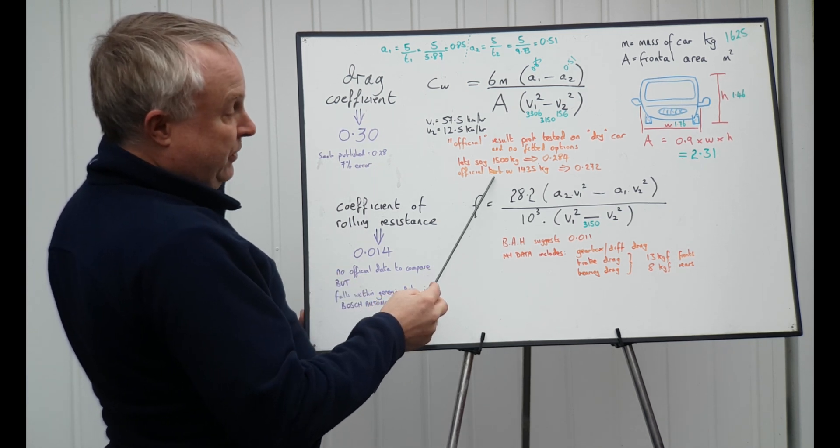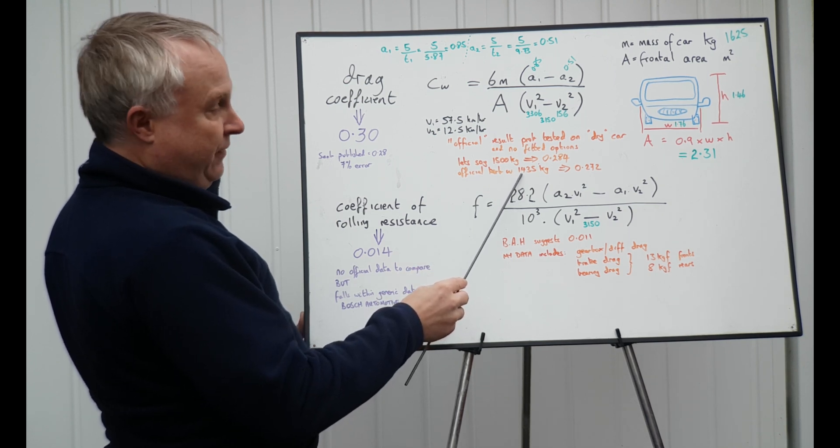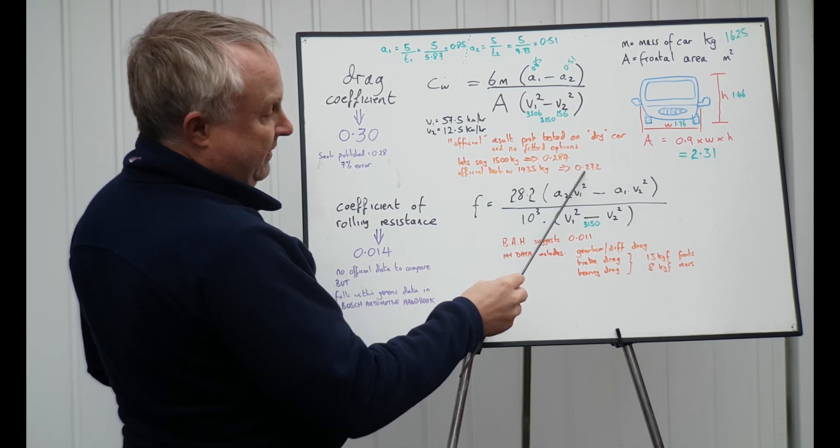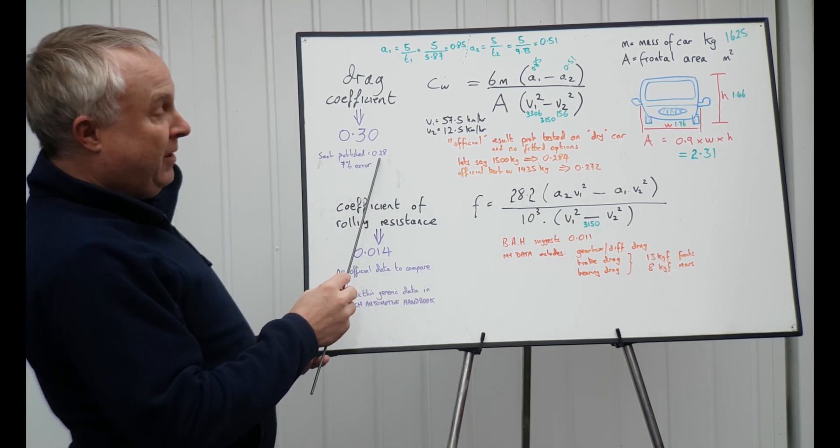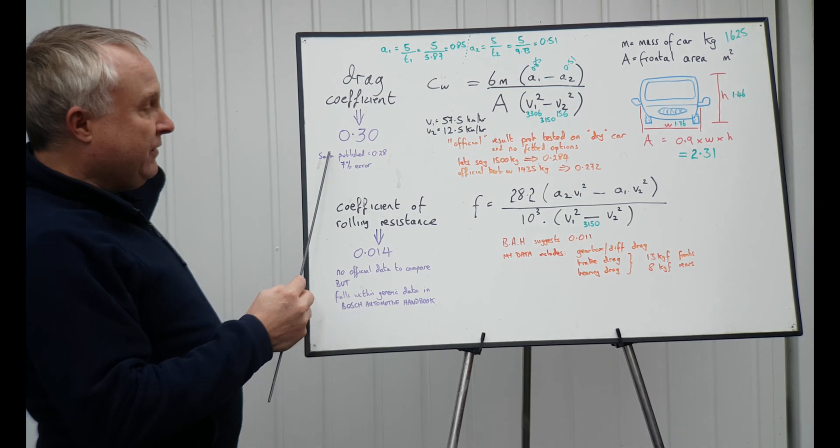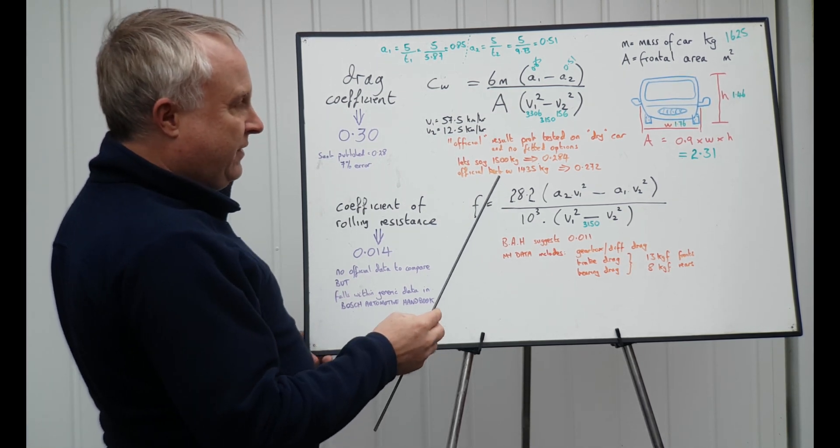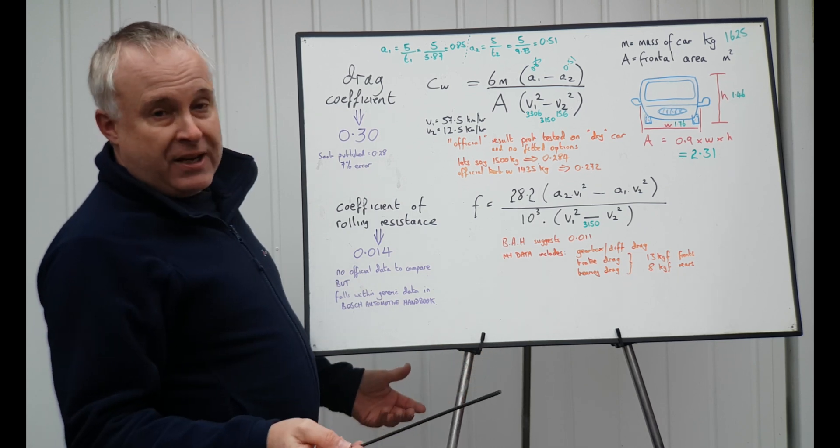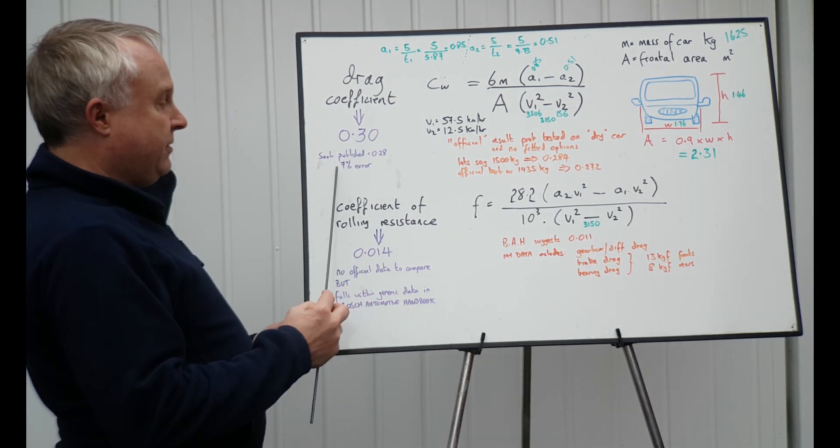If we were to take the official kerb weight of this car, which is 14.35 kilos, then I would have calculated 0.272, which again is fairly close, but a little low. So, I don't think I've done too bad. This car's got a number of options on it that add to the weight of the car. It's also got different tyres compared to the factory car, but I think that's good. 7% error. Happy with that.